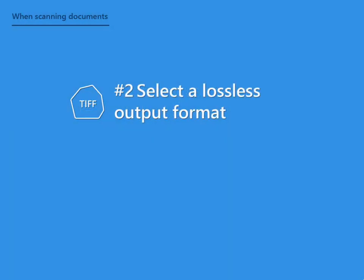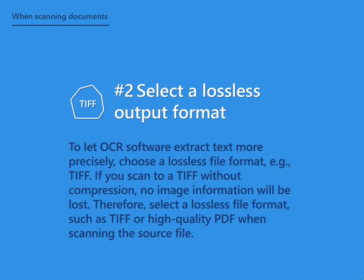Tip 2: Select a Lossless Output Format When Scanning. To let OCR software extract text more precisely, choose a lossless file format such as TIFF. If you scan to a TIFF without compression, no image information — roughly speaking, pixels — will be lost. Therefore, select a lossless file format such as TIFF or high-quality PDF when scanning the source file.